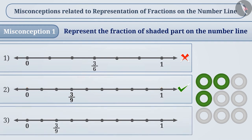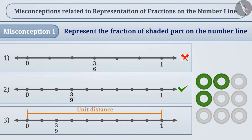Sometimes, the fraction is identified correctly and the unit distance is also divided into 9 equal parts, but to represent 3 out of 9 parts, counting is done from 0 to 3 and the fraction 3 by 9 is represented on the 3rd point from 0. This is a misconception.